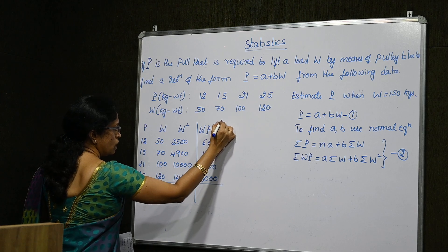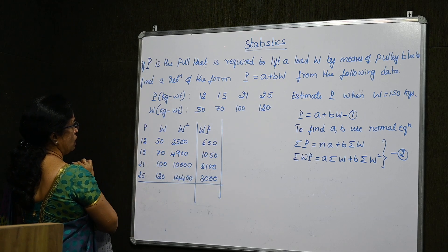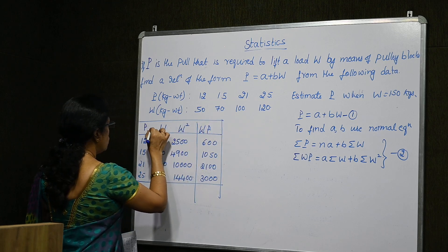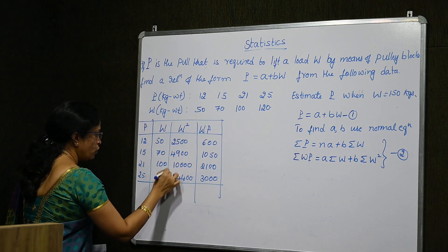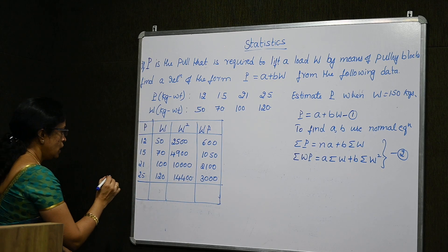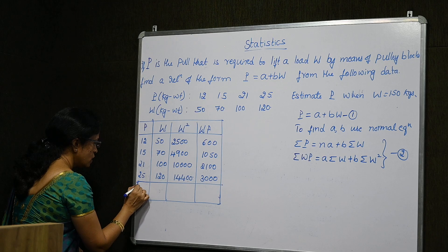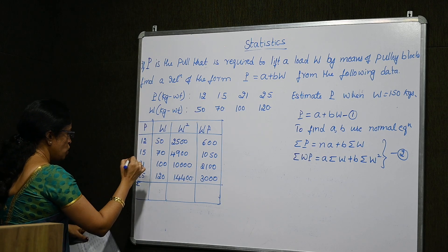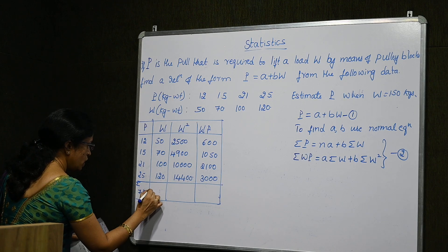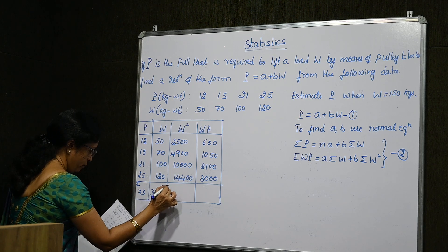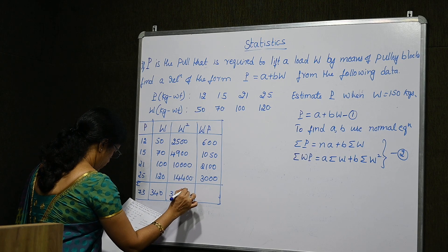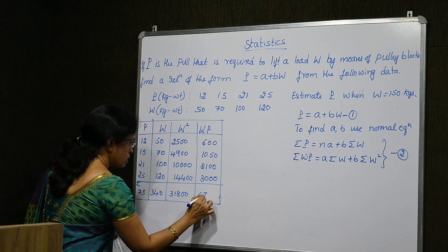Taking the summation of all values: sigma P is 73, sigma W is 340, sigma(W squared) is 31,800, and sigma(WP) is 6,750. I have taken only 4 values to make the calculation easier.